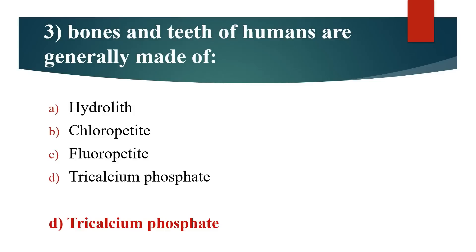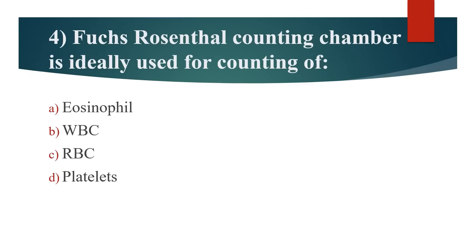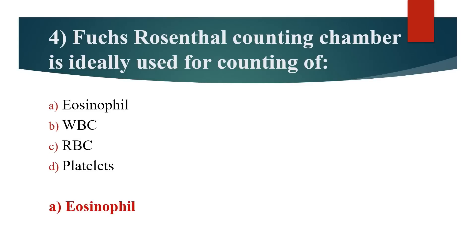Fourth question: Fused Rosindale counting chamber is ideally used for counting of? Option A: Eosinophil. Option B: WBC. Option C: RBC. Option D: Platelets. Answer is Option A: Eosinophil.